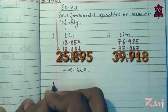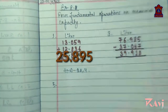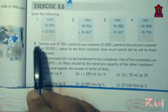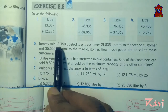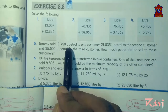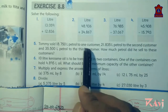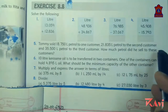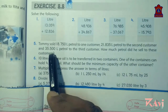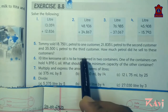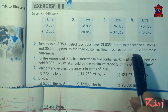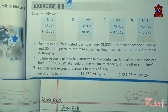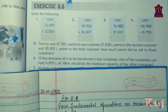Let's move to question number 5. Here problem sums are there. Let's read this question. Tommy sold 18.750 litres of petrol to one customer, 21.835 litres to the second customer, and 35.500 litres to the third customer. How much petrol did he sell to all these customers? We need to add — it's a simple addition question.